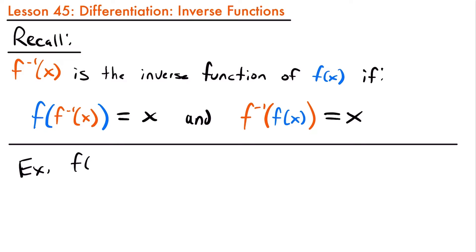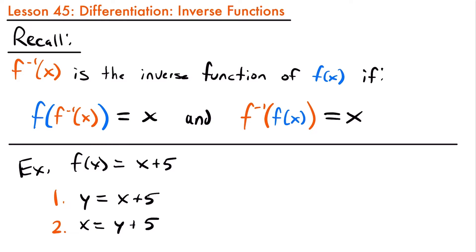For example, let's say we had the function f of x equals x plus 5. What would be the inverse function? There's a three-step process. Step one: set y equal to the function, so y equals x plus 5. Step two: swap the variables — change y to x and x to y — giving us x equals y plus 5. Step three: solve for y by subtracting 5 from both sides, giving y equals x minus 5. So f inverse of x equals x minus 5.